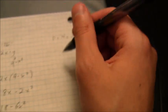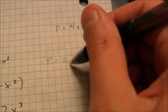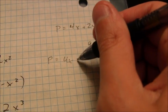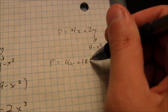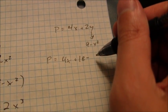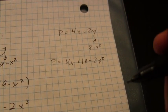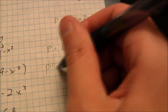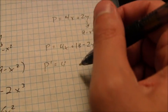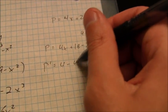Once again, y is 9 minus x squared. So the equation I end up getting here is p equals 4x plus 18 minus 2x squared. p prime is going to be equal to 4 minus 4x.